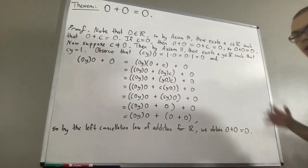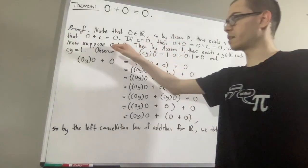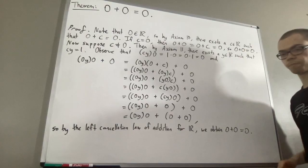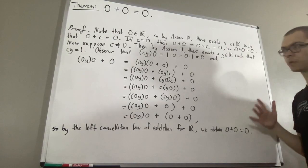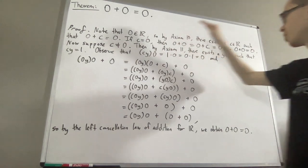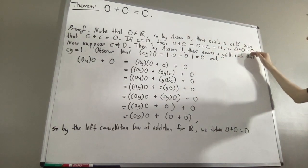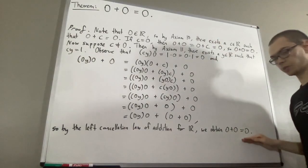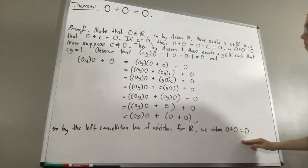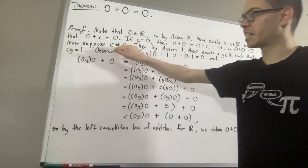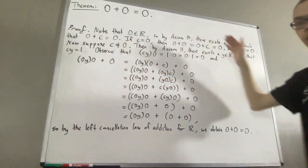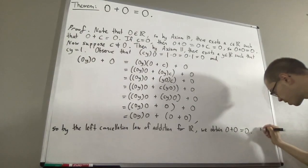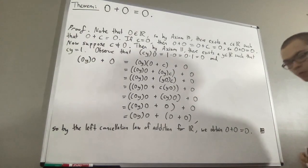So that's it. Under the assumption that c is not equal to zero, we've logically deduced that zero plus zero is equal to zero. We have shown: if c equals zero then zero plus zero equals zero, and if c does not equal zero then zero plus zero equals zero. Since one of these must be true, it follows that zero plus zero is equal to zero. This completes the proof.